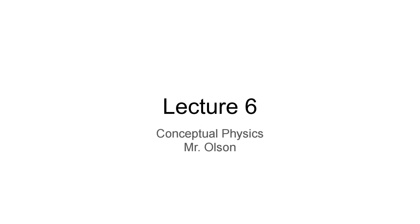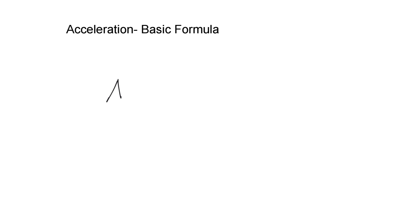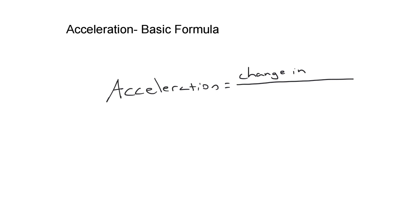Hello and welcome, this is lecture number six — it's going to be about acceleration. Go ahead and put the date at the top of your notes. Here is our most basic formula for acceleration: acceleration is equal to the change in velocity over time. That is our most basic formula, so if the velocity is changing, you must be accelerating. Notice we say velocity, not speed, because just changing direction is a change in velocity — velocity has both speed and direction.